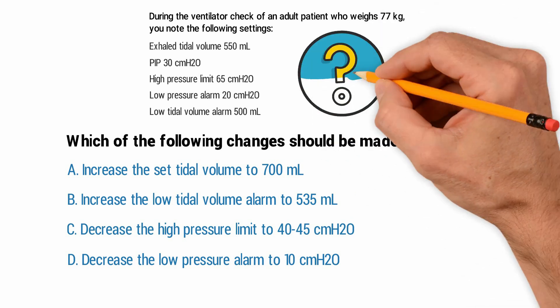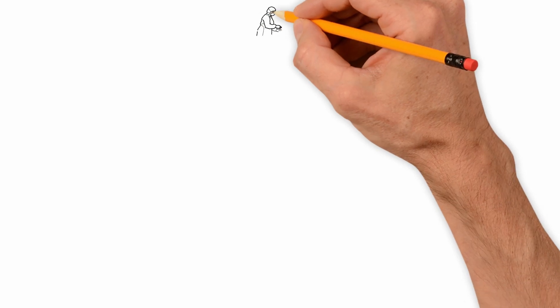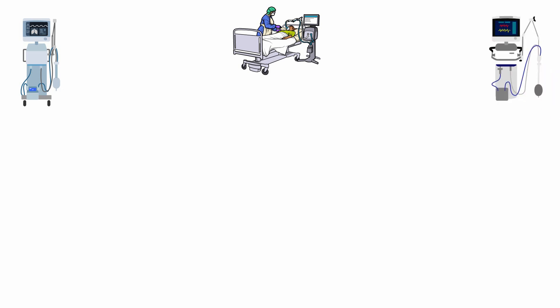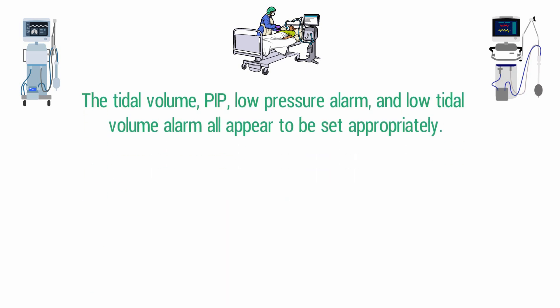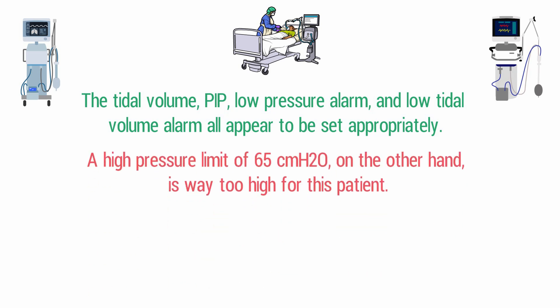Do you know the answer? Let's break it down. To answer this correctly, you need a basic understanding of ventilator settings and alarms — definitely a topic to spend time on when preparing for the TMC exam. For this patient, all of the settings are acceptable except one. The tidal volume, peak inspiratory pressure, low pressure alarm, and low tidal volume alarm all appear to be set appropriately. However, a high pressure limit of 65 is way too high for this patient.